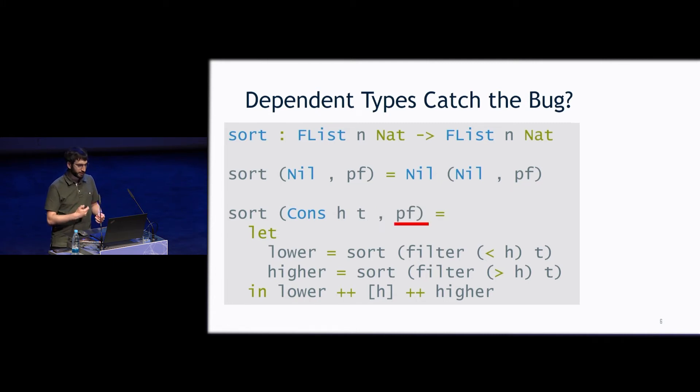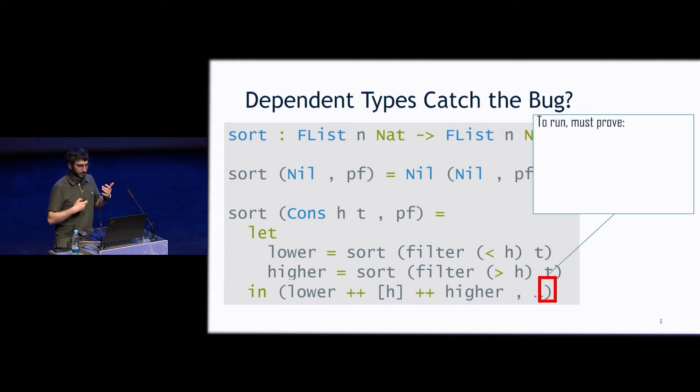But when we get to our cons case, we get a proof that the length of cons is 1 plus the length of the tail. But when we're producing our result, we don't know, well, we need a proof to put here. And the thing that we actually have to prove looks like this.